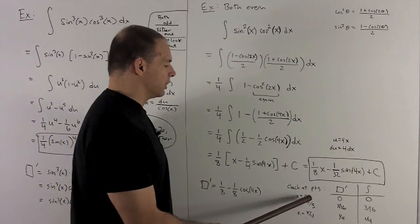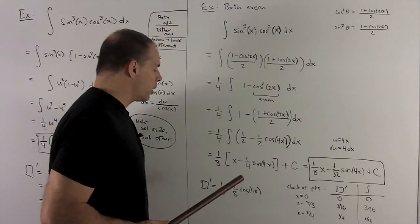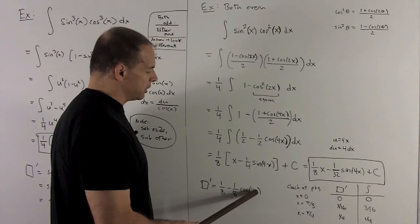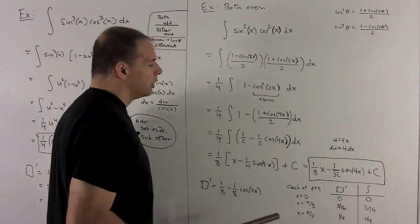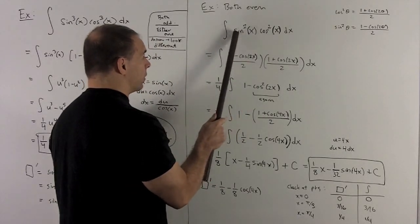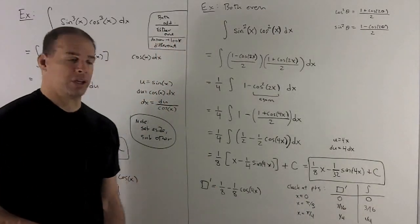All we're trying to do here is convince ourselves that we have the right answer. So let's check it at a few points. I'm going to go with 0, pi thirds, and pi fourths. If I put 0 into what's in the box, well, cosine of 0 is 1. So this is going to go to 0. If I look at what's in the integrand, well, sine of 0 is 0. So this whole thing goes to 0. So we get a 0 over here. And we're looking good.